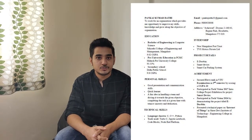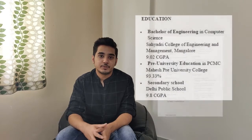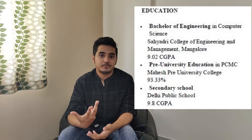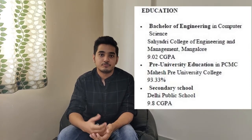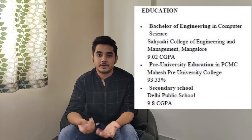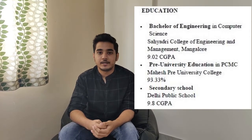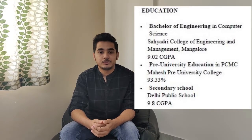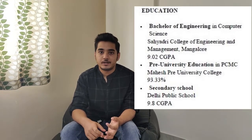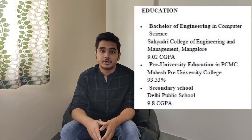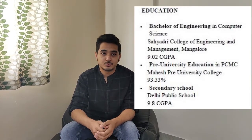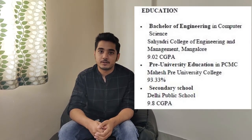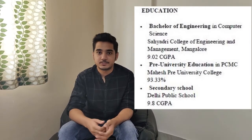The third section is your education. You have to mention from your highest education to your lowest — that is, your Bachelor's of Engineering, followed by pre-boards (11th and 12th), followed by your 10th (secondary school). Make sure you mention your college name as well as your CGPA. For example, I graduated from Saryatry College of Engineering with a CGPA of 8.97.